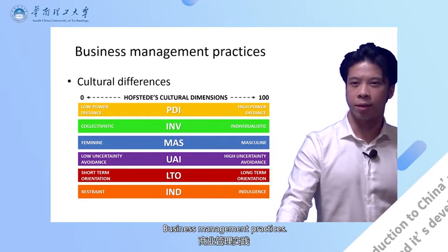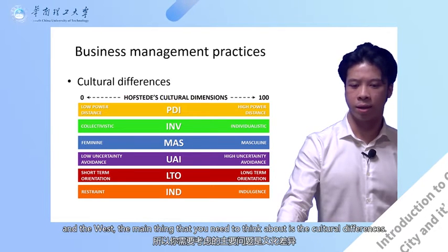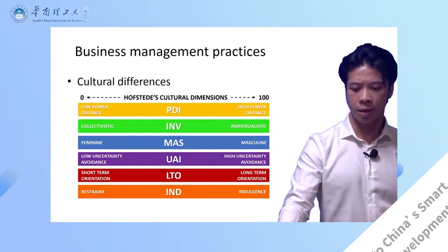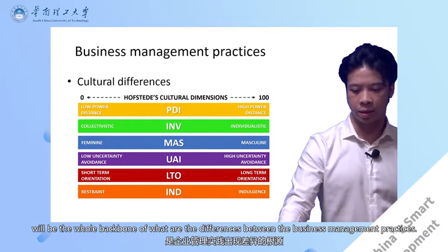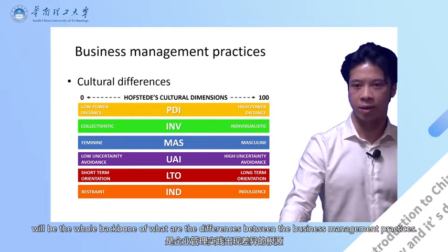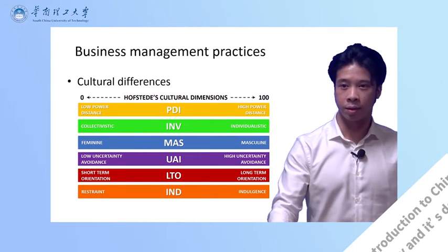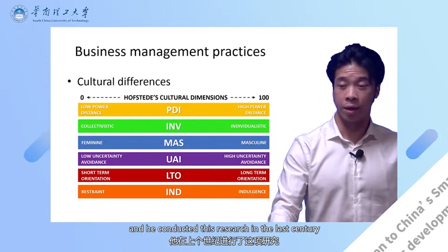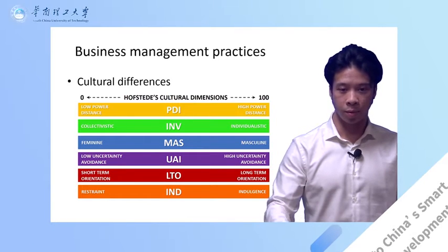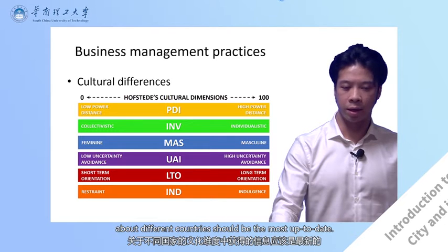Business management practices: whenever we talk about business management practices, and since we are doing a comparison between China and the West, the main thing you need to think about is what are the cultural differences. Cultural differences will be the whole backbone of the differences between business management practices. One of my favourite ways to understand different cultures is to use Hofstede's cultural dimensions. Hofstede is a researcher who conducted this research in the last century, and his work has been continuously updated, so the information should be the most up-to-date.